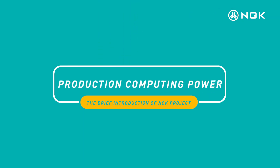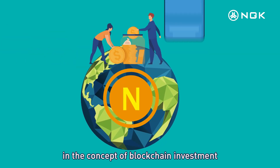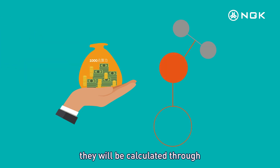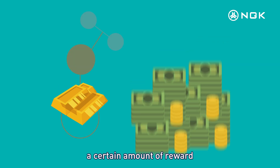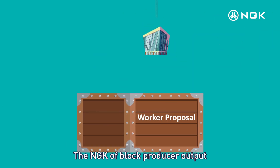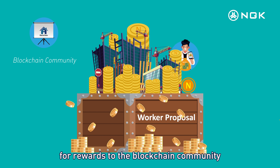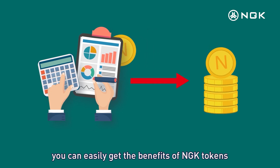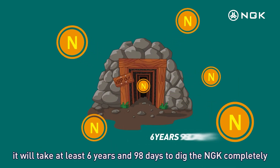Production Computing Power: The NGK Digital Gain Platform allows investors around the world to participate in blockchain investment. Those who hold USDN buy computing power from block producers. After acquisition of computing power, they will be calculated through new blocks by the block producer, and output blocks correspond to a certain amount of reward. Block producers take the NGK tokens generated by the block as investor returns. The NGK output will first enter the Worker Proposal Ecological Fund pool for rewards to the blockchain community, ecological builders, and dApp developers. By taking part in the operation, you can easily get the benefits of NGK tokens, and at the current rate of output, it will take at least 6 years and 98 days to mine all NGK completely.